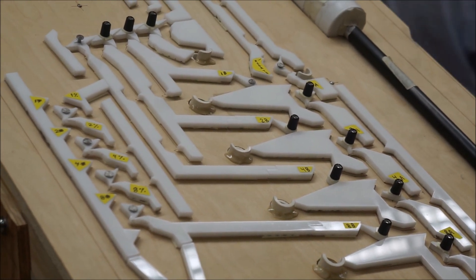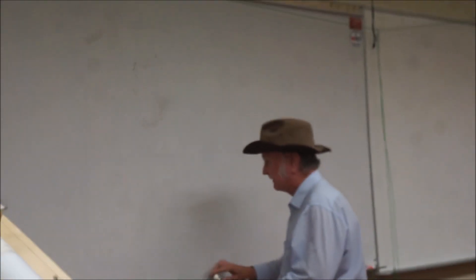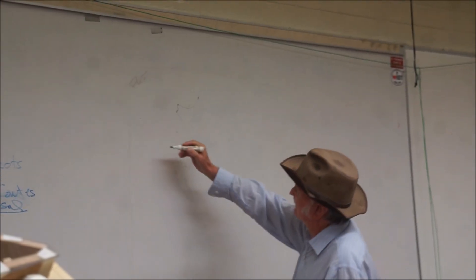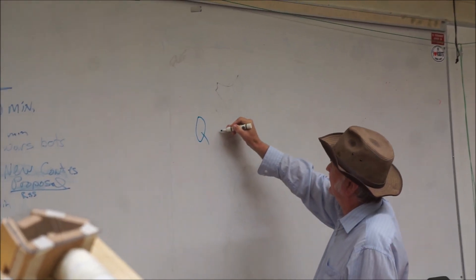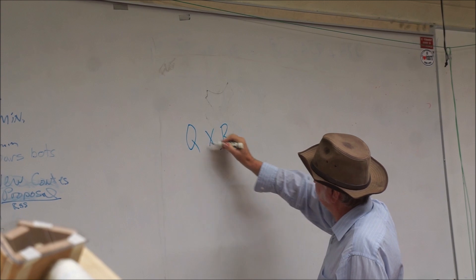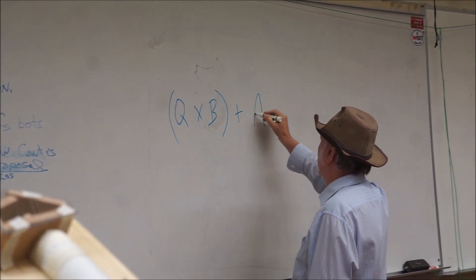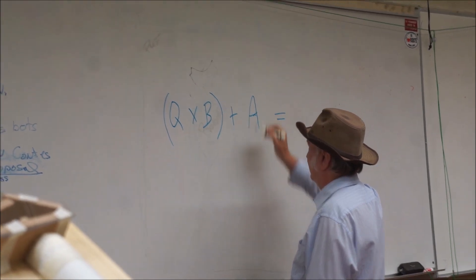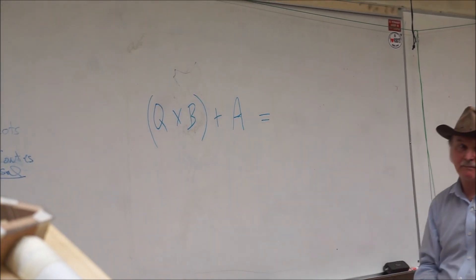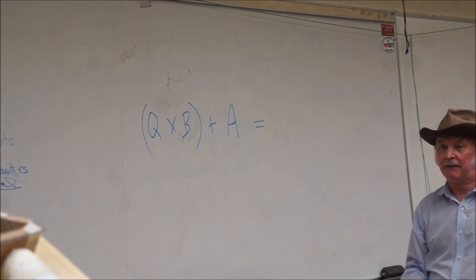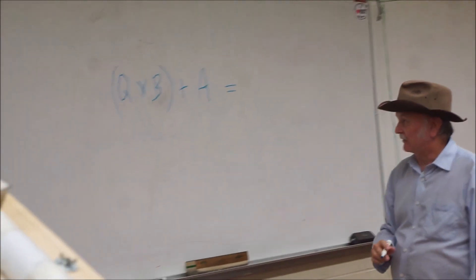The basic operation of the machine solves this equation. It solves Q, whatever is in the Q register, multiplied by whatever is in the B register, adds whatever is in the A register, and tells you the answer. So it's a multiply and accumulate. Essentially, the operation performed is a MAC, multiply and accumulate. But instead of using electronic logic gates, it uses purely mechanical logic gates.